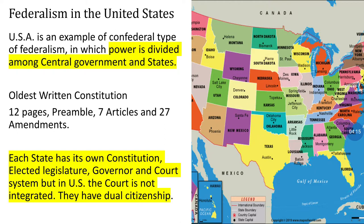The USA's written constitution is only for its center, whereas in India, our constitution covers both the center and different states — we have provisions for all. So our constitution is very lengthy. In the USA, every state — all 50 plus one — has a different constitution, different rules and regulations. So you can understand that the states have their own different written constitutions.